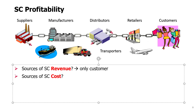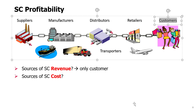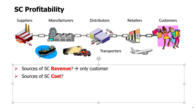The customers who buy the product pay to the retailer, but then part of that the retailer will pay to the distributor, then the distributor to the manufacturer, and then the manufacturer to the supplier. So this revenue from customers will be somehow redistributed over all companies involved in the supply chain. There is only one source of revenue, but there are many sources of cost.